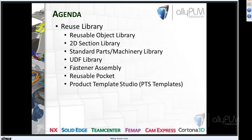In front of you, you see an agenda. Our goal today is to take a very high-level look at what the Reuse Library is. Some of the items listed here — reusable objects, standard parts — are some of the default content that gets loaded when you install NX, designed as a sample of what you can do. We'll go through the Reuse Object Library, faster assembly, reusable pockets, and a short introduction to Product Template Studio.